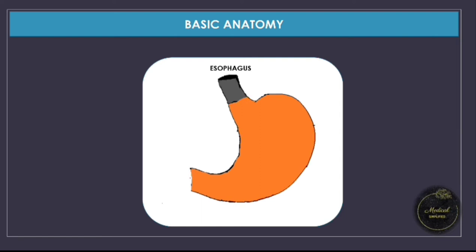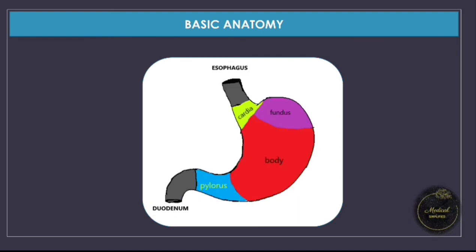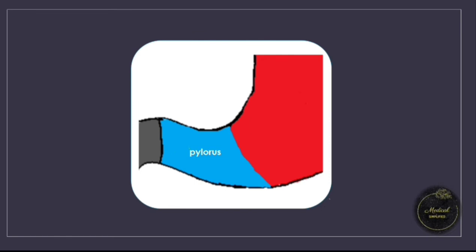Here is our stomach, which is in continuation with the esophagus above, from where it receives food. It is connected below with the duodenum, via which food leaves the stomach and reaches various parts of the intestine for further modification. The stomach can be divided into cardia, fundus, body, and pylorus, which is our main area of discussion here.